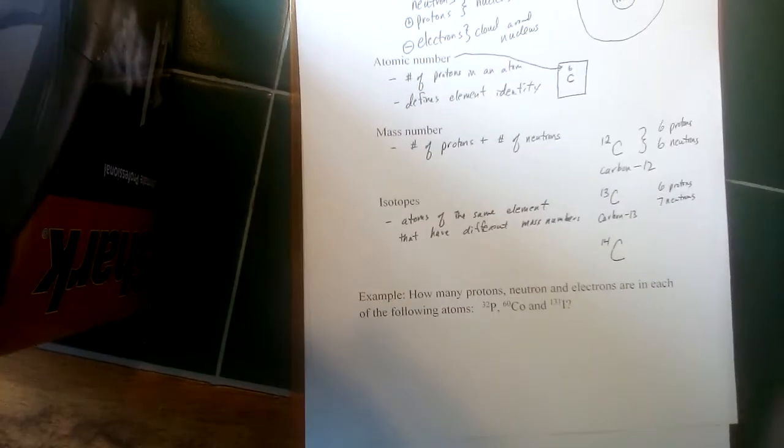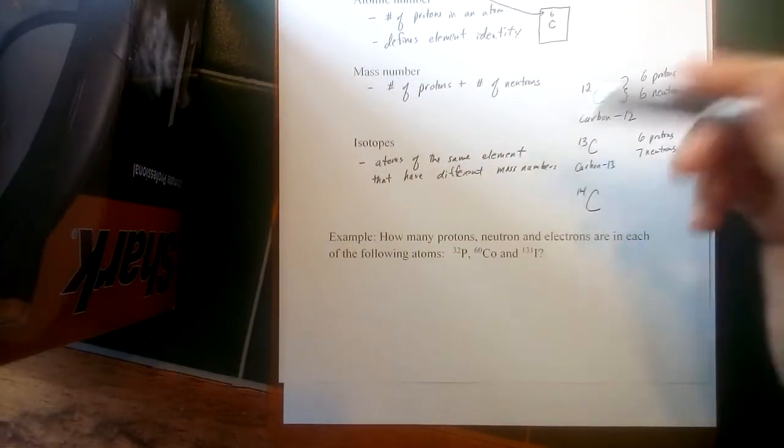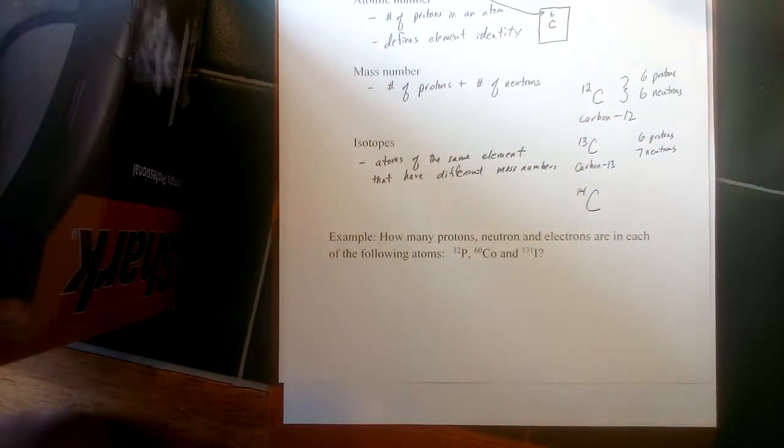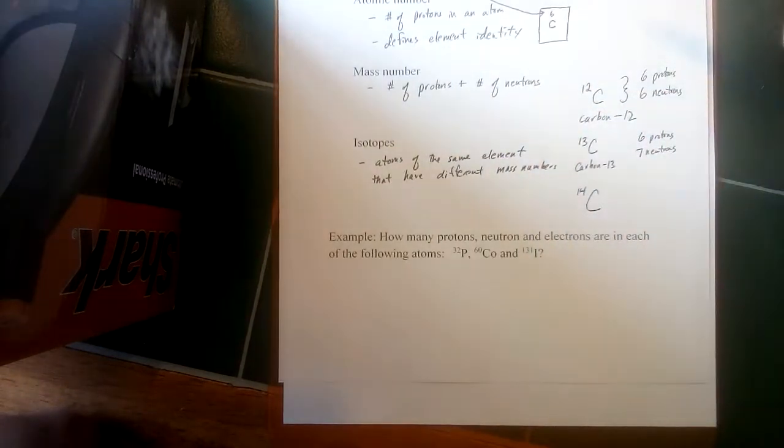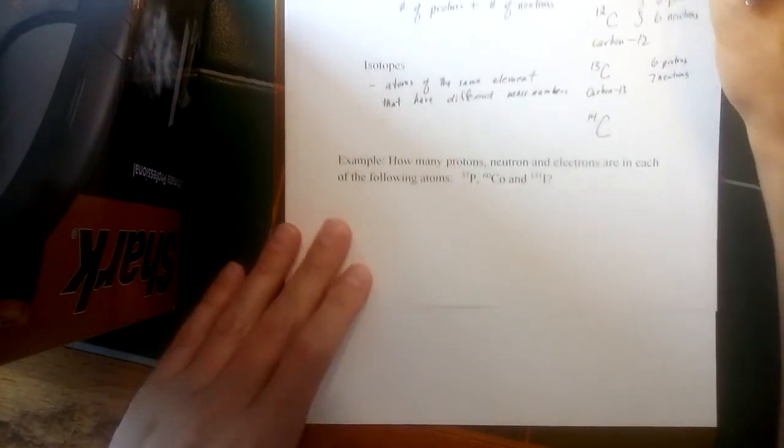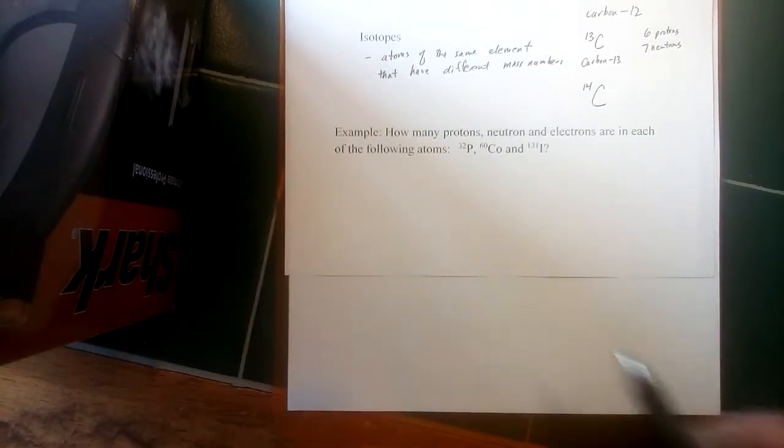Okay, moving on from the last video, we talked about some of these basic subatomic particles: electrons, protons, neutrons, how we can identify the atomic number, and how we can identify the mass number as it relates to a specific element. At the bottom of the page I've got a couple examples here, and we'll have to talk about something new.